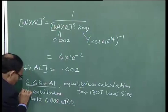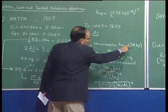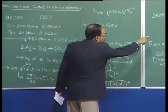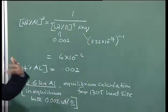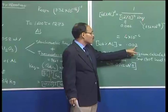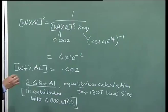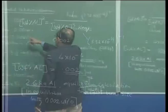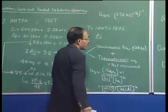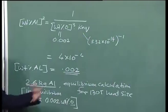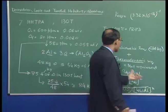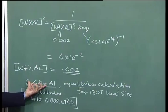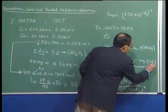Combining the stoichiometric requirement of approximately 84 kg and the thermodynamic requirement of 2.6 kg, the net requirement is approximately 86.6 kg of aluminum per 130-ton heat. For every 130-ton heat we require 86.6 kg of aluminum, and translating this to 7 million tons of annual steel production gives approximately 5000 tons of aluminum required per year.